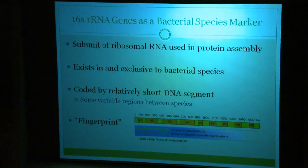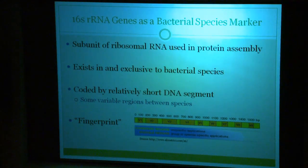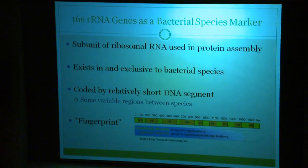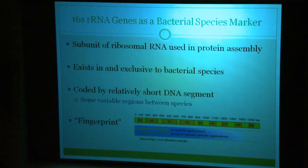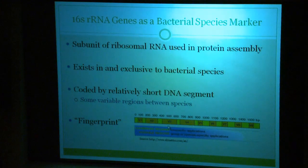In constructing clone libraries, rather than sequencing entire bacterial genomes, biologists use a section of DNA that encodes for a part of the small subunit of the bacterial ribosome known as the 16S rRNA gene. The 16S genes are the gold standard for bacterial phylogenetic analysis and identification, because these are relatively short segments that exist in and are exclusive to bacterial species, but have variable regions between species. Essentially they act as a genomic fingerprint — all bacteria have them, but we can use these variable regions within the sequence to differentiate between species.